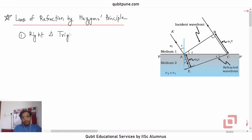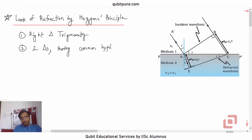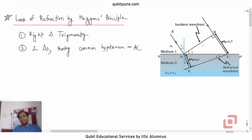We need to consider two triangles which share a common hypotenuse — according to the figure, that hypotenuse is AC. AB is the incident wavefront at oblique incidence — angle of incidence not equal to zero — and in medium 1 the speed of propagation of light is V1.